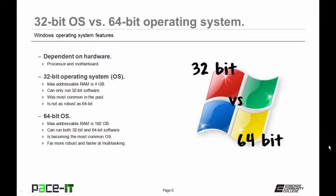A 32-bit operating system can only have a max of 4 gigabytes of RAM — that's all that's addressable. You can only run 32-bit software. 32-bit operating systems were the most common in the past, and they're not quite as robust as 64-bit.